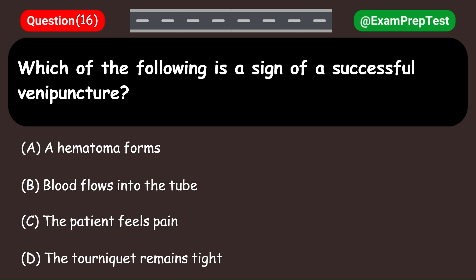Which of the following is a sign of a successful venipuncture? A. A hematoma forms. B. Blood flows into the tube. C. The patient feels pain. D. The tourniquet remains tight. Answer: B. Blood flows into the tube.